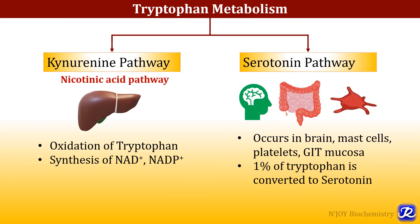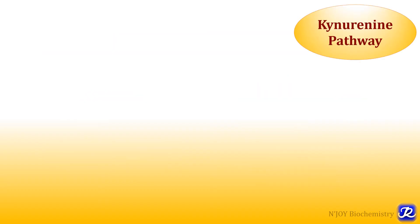The serotonin pathway occurs in the brain, mast cells, platelets, gastrointestinal cells, and mucosa, and 1% of tryptophan is converted to serotonin by this pathway. So the first pathway is the kynurenine or nicotinate pathway.